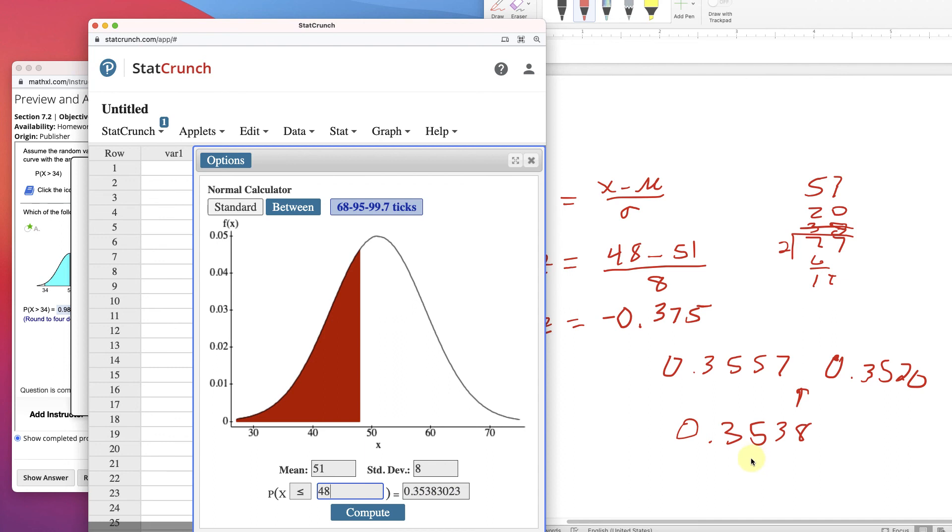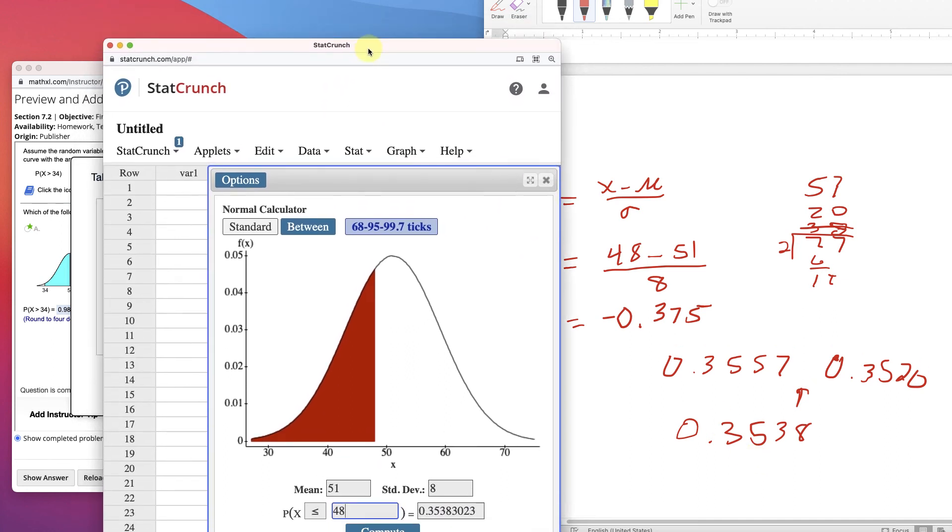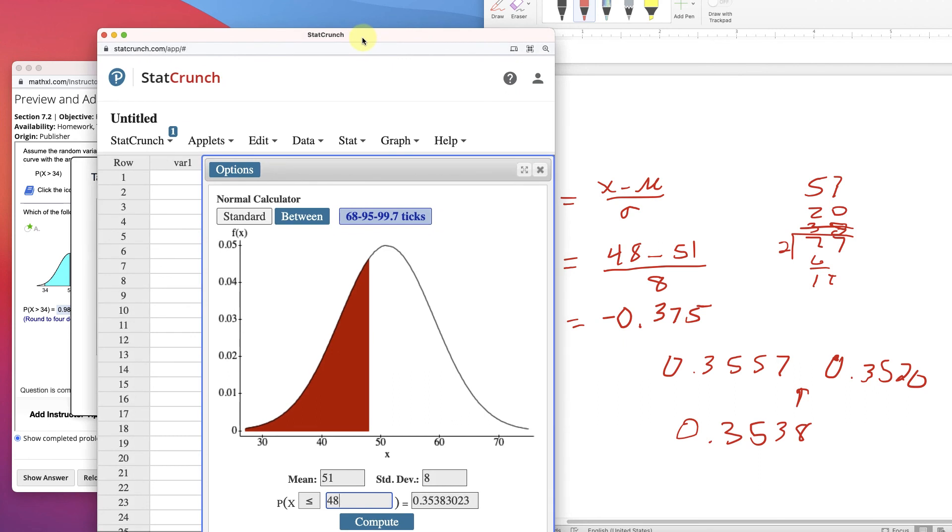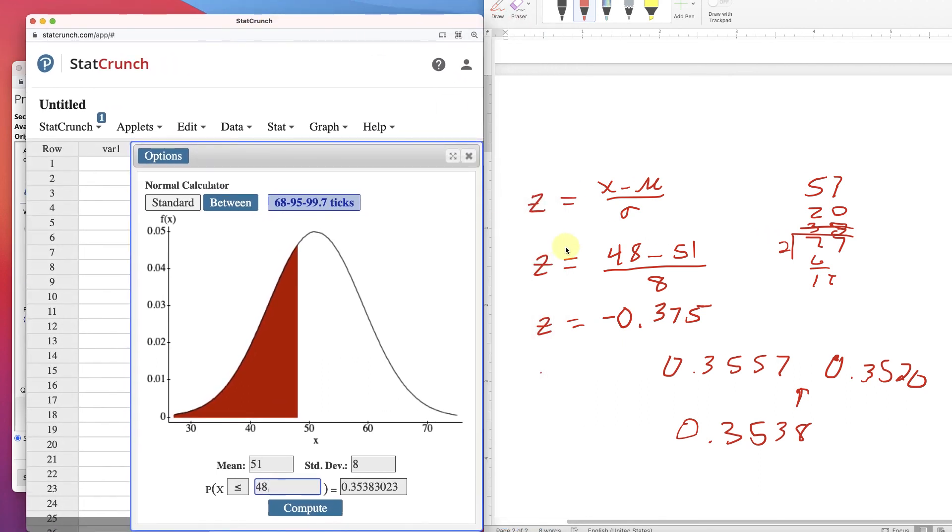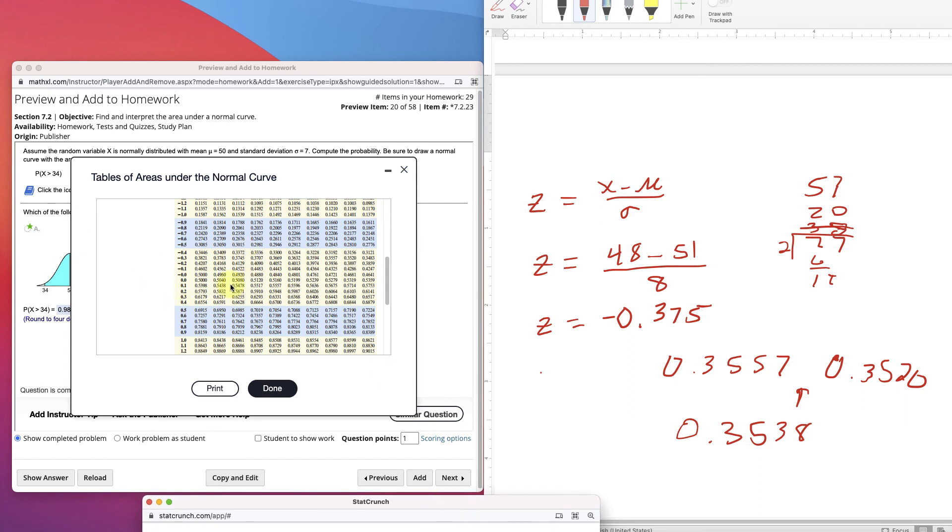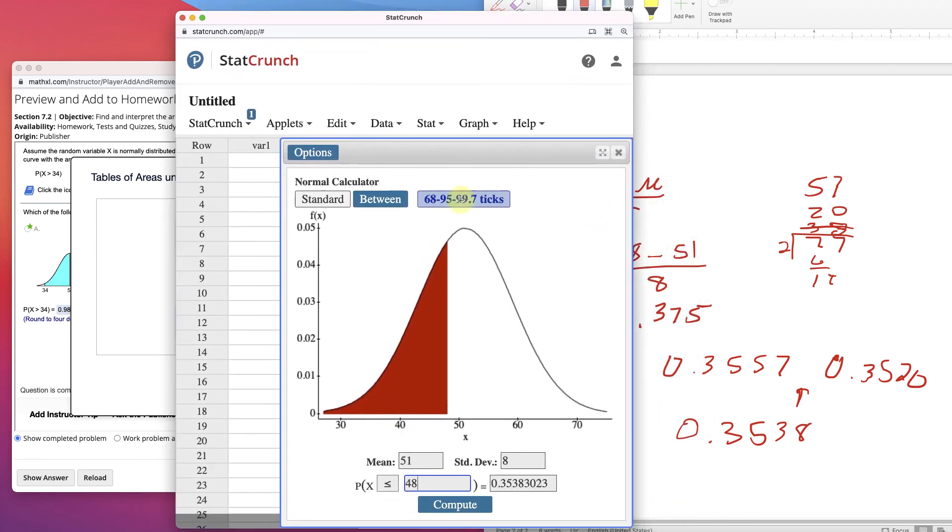But using StatCrunch is going to get you the answer more closely what they're looking for. So, but that's what it means when you go to change to the z-score. You use the z-score because you're standardizing that data so that you can look at the table and get your probability. StatCrunch does all that for you when you enter your data.